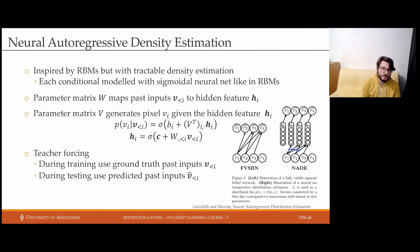One of the first works to try to do density estimation using autoregressive models and deep neural networks was the Neural Autoregressive Density Estimation by LaRochelle and Murray. Their model is inspired by RBMs, in the sense that they are using sigmoidal neural networks, like in RBMs, to model the conditionals. However, unlike the RBMs, this model is tractable, it can compute the density tractably. This model relies on two equations. The first equation maps past inputs on a hidden state, and then the second equation maps the hidden state to a future input.